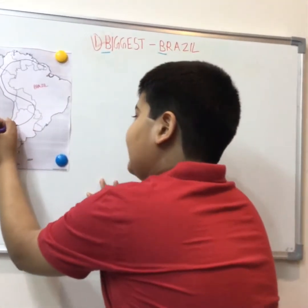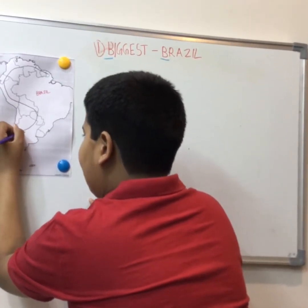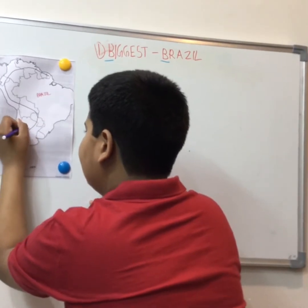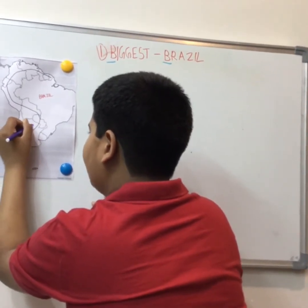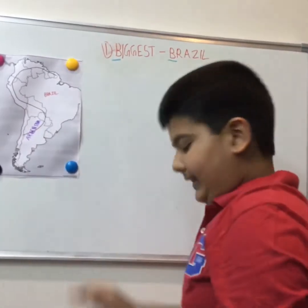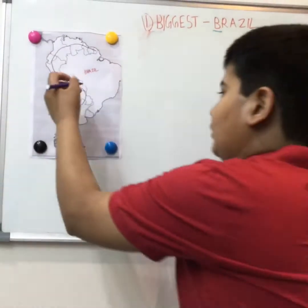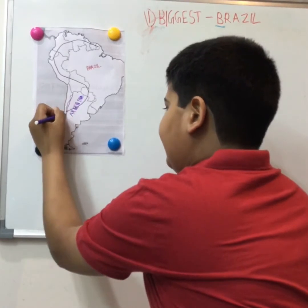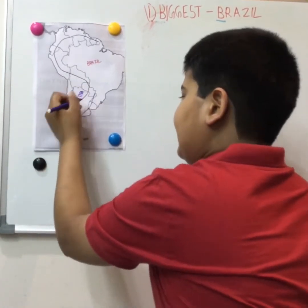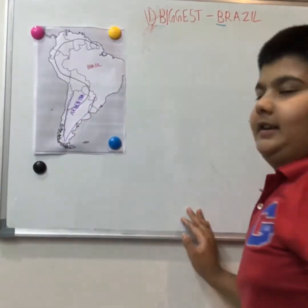This is Argentina. It is the second biggest country, and it is also in the shape of an inverted A. So from the inverted A shape, we can learn that the country's name starts with A — Argentina.